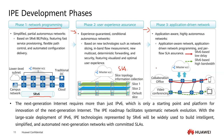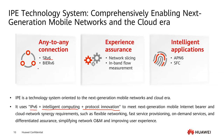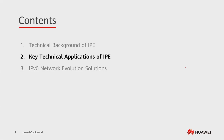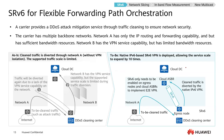The IPv6 technology system includes new technologies such as SRv6, FlexE, iFit, BIERv6, and others — most of which are introduced in detail in the WAN scenarios part of the course. For BIERv6 we will introduce it later. Next we will introduce some key technology applications of the IPE technology system, starting with SRv6.